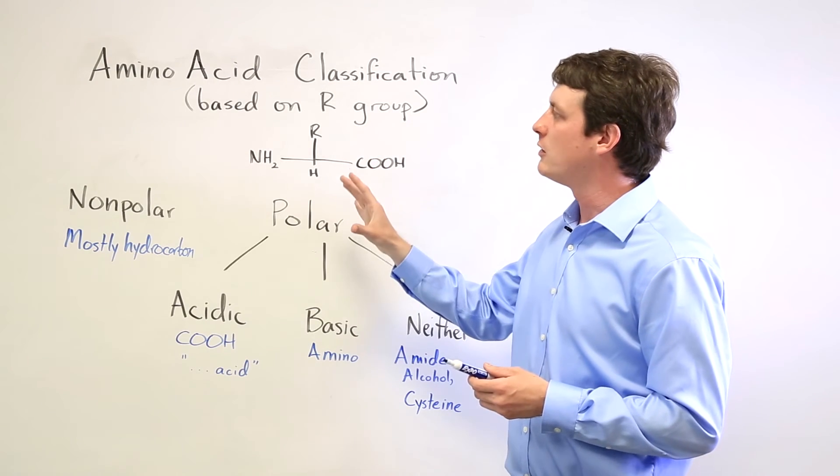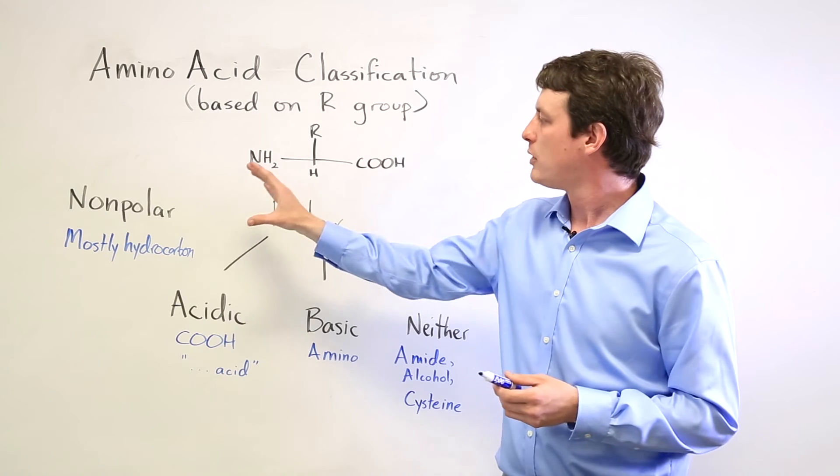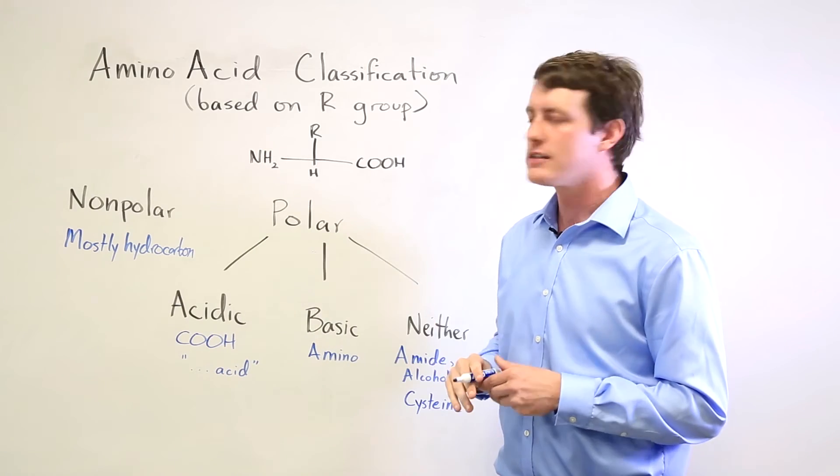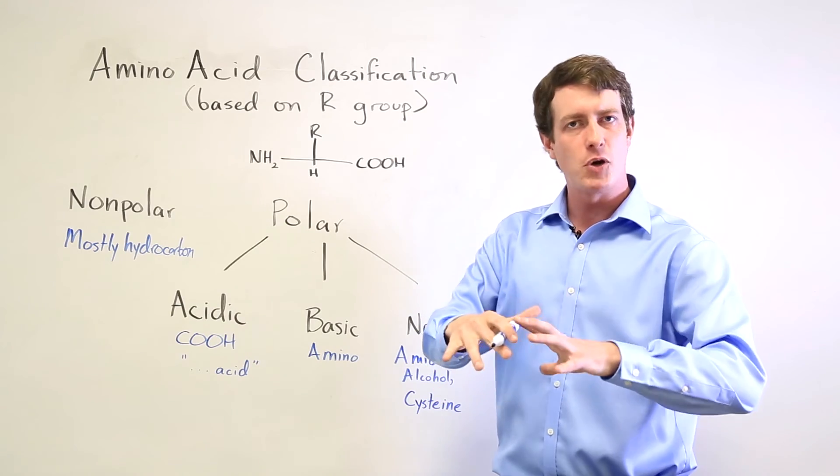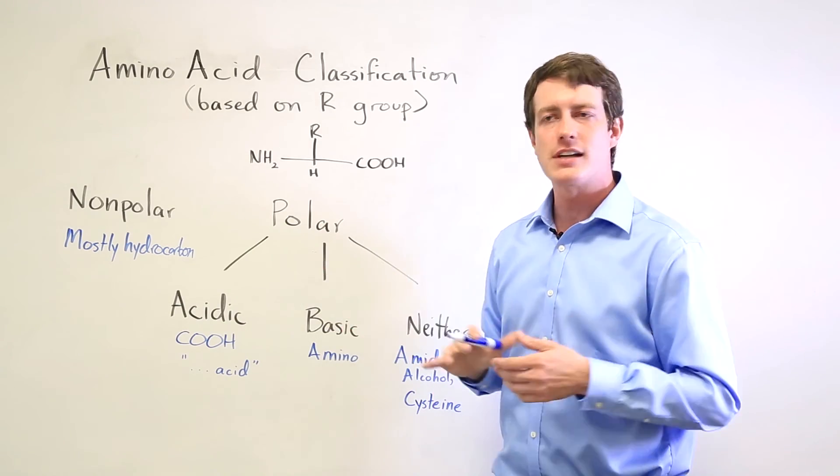And so the classification of amino acids, first you want to know if they're nonpolar or polar, because the nonpolar ones tend toward the inside of the protein, and the polar ones tend to face outside.